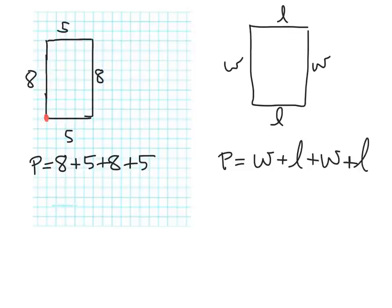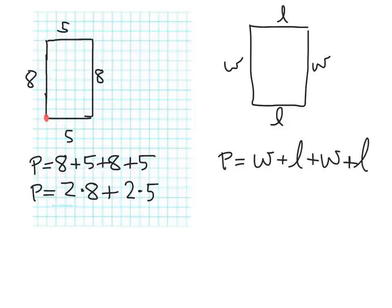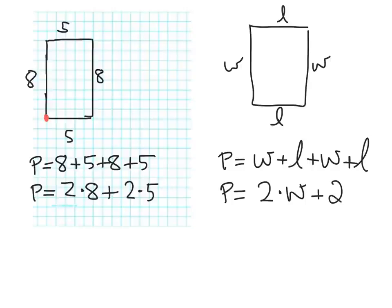Now, another way we could write it — we have two 8s, we have an 8 plus an 8, and we have a 5 plus a 5. So one way we could do it is we could say we have 2 times 8, so that's 8 plus 8, plus we have 2 times 5. Why do we have 2 times 8? Because we have two 8s. Why do we have 2 times 5? Because we have two 5s, and we're adding them together. So what would that look like over here in the general rectangle? Instead of having two 8s, we have two Ws. So it's going to be 2 times W plus 2 times L.